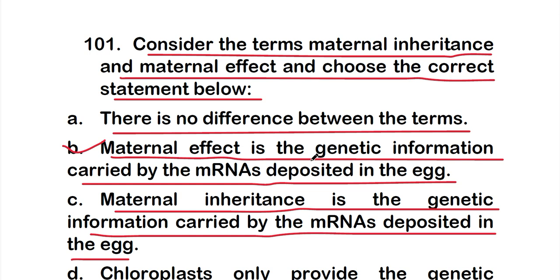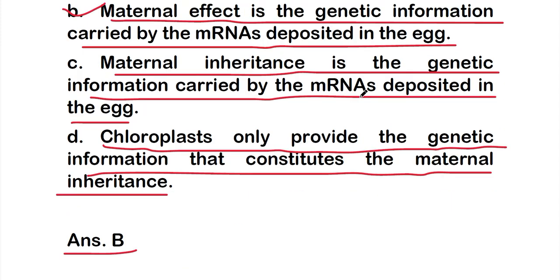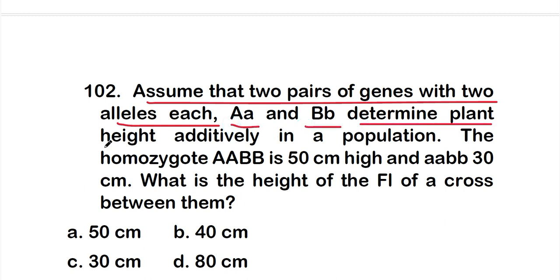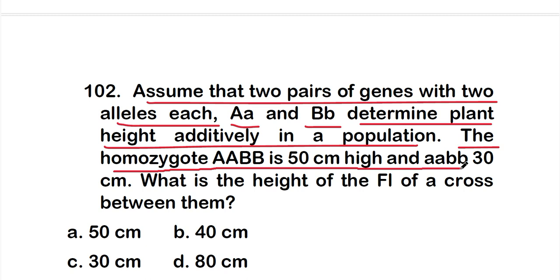So that is the correct statement about maternal inheritance. Moving on to Question 102: assume two pairs of genes with two alleles each — capital A / small a and capital B / small b — determine the plant's height additively. The homozygote AABB is 50 cm high and aabb is 30 cm. What is the height of the F1 of a cross between them?